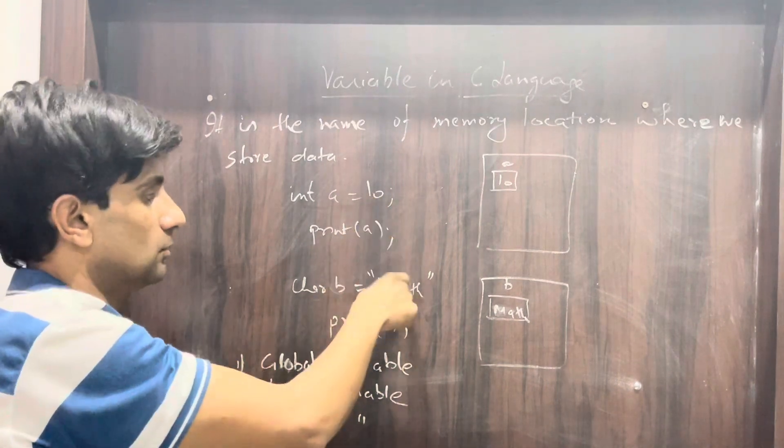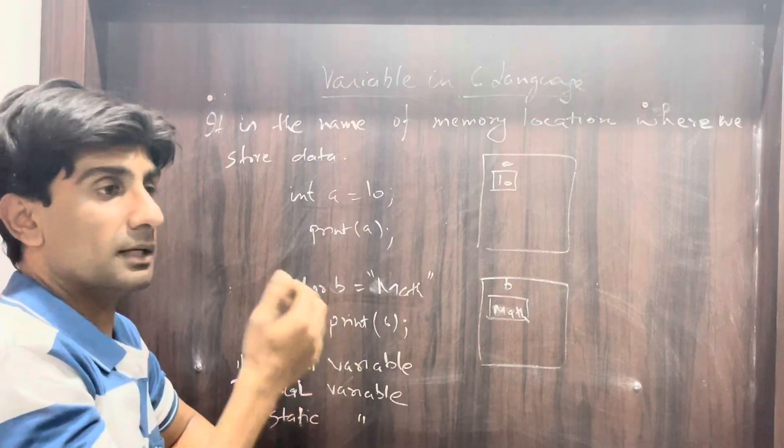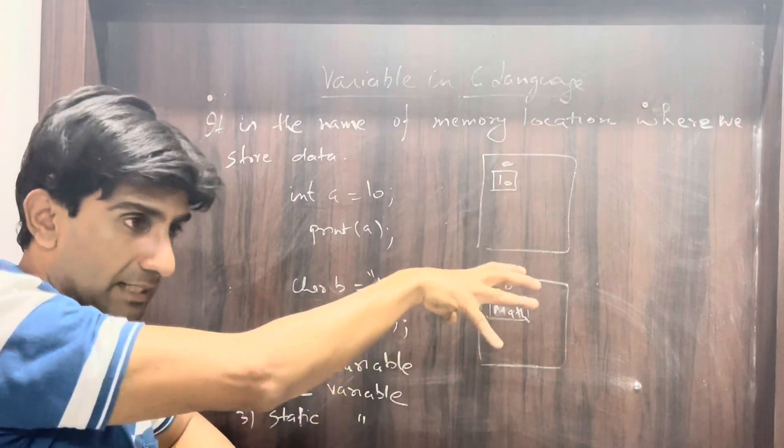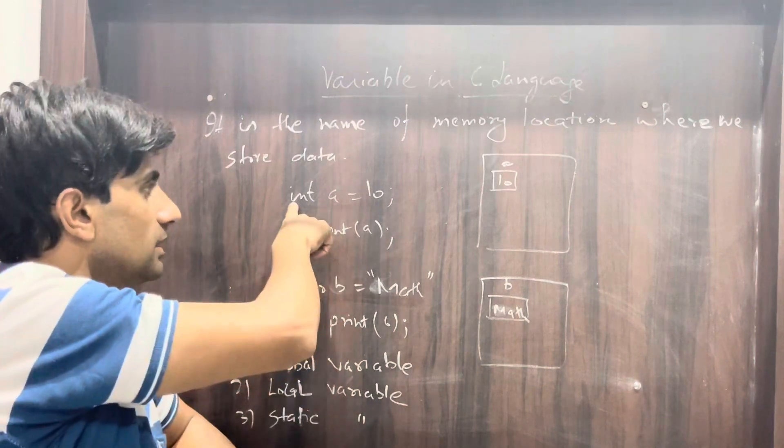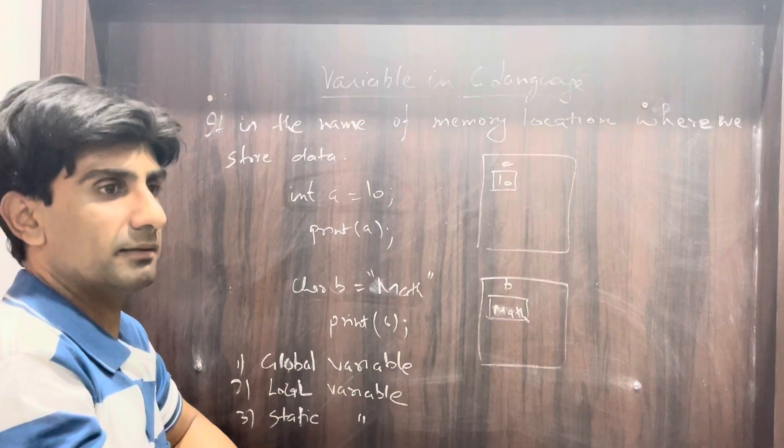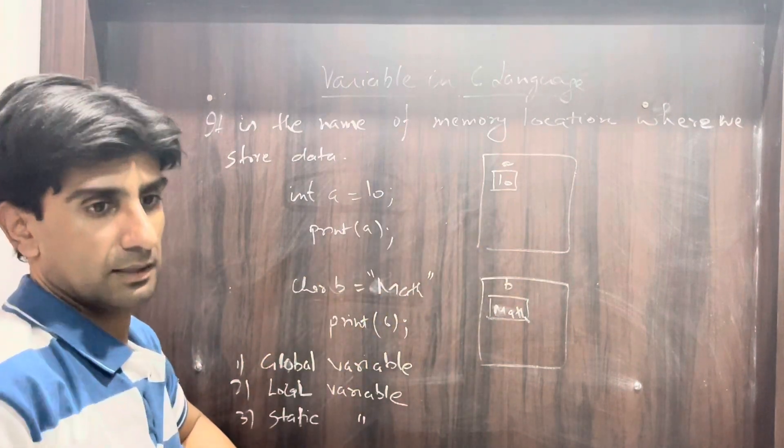If I print 'a' or print 'b', it will give us these outputs. If I print 'a', I will get 10 because the computer will take the information which is stored in that block and show it to us. First, the computer will create memory for this input, then when we print the output command, the computer will give us the output.